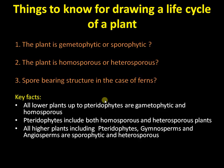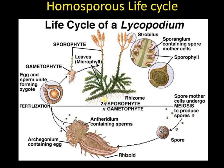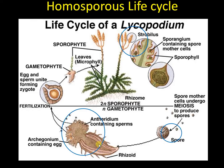Now let us look at the life cycle of a homosporous plant. In the case of Lycopodium, the spore-bearing structure is the strobilus. Inside the strobilus there are spore mother cells that undergo meiosis to form haploid spores which are homosporous, and these give rise to a gametophyte that contains both antheridium and archegonium.